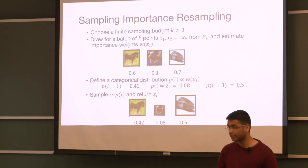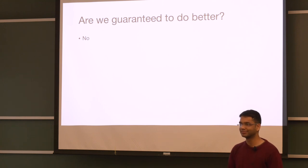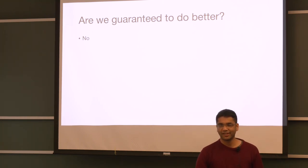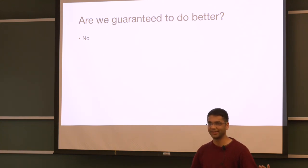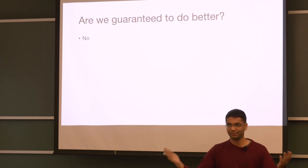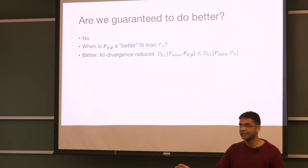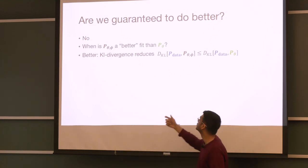A theoretical question is: are we always guaranteed to do better? The answer is no. As a simple counterexample, if someone gave you the Bayes-Optimal classifier but flipped the probability — returning 1 minus p instead of p — you would down-weight good samples and up-weight bad ones. So the question becomes: when is this guaranteed to work better? We have a necessary and sufficient condition which says that the expected log weights under the data distribution must exceed the log partition function, then we are guaranteed to do better. The left-hand side can be estimated via Monte Carlo by drawing samples from the data distribution and doing a sample average of the log weights; the right-hand side is harder because a Monte Carlo estimate of Z leads to a biased estimator for log Z.